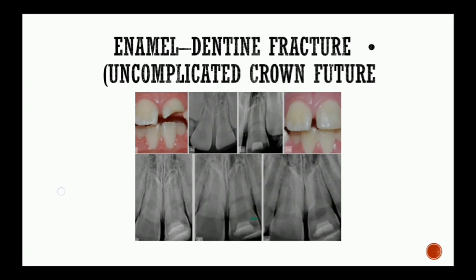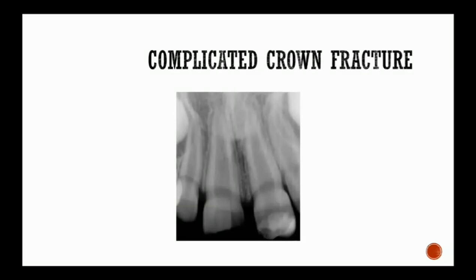The enamel-dentine fracture does not involve the pulp. While a complicated crown fracture is a fracture involving enamel and dentine that also exposes the pulp.